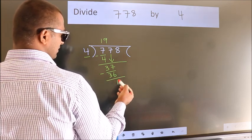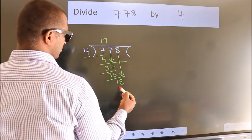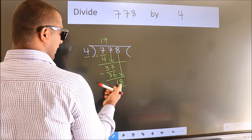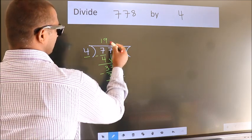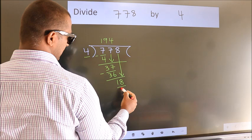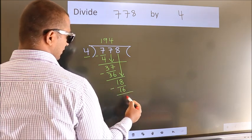After this, bring down the next number. 8 down, giving us 18. A number close to 18 in the 4 times table is 4 times 4, which is 16. Now we subtract and get 2.